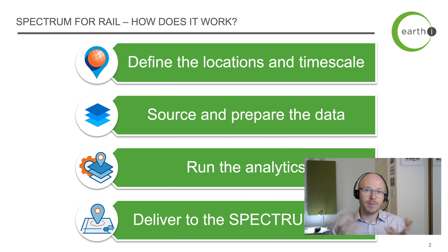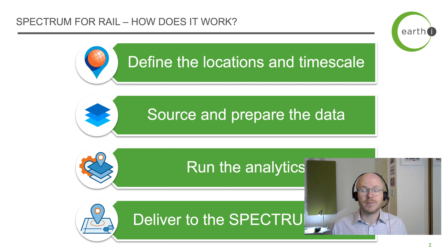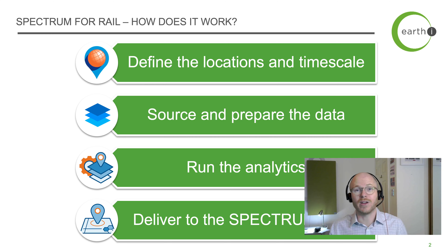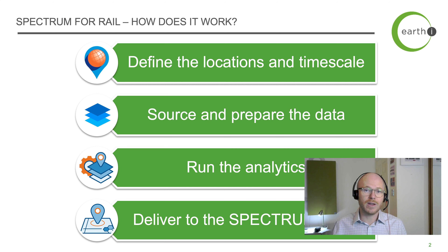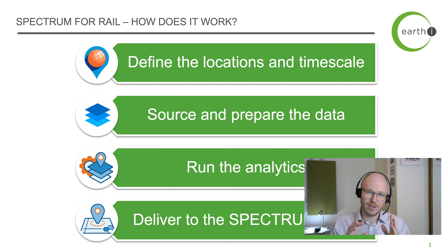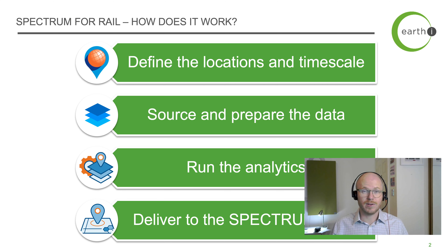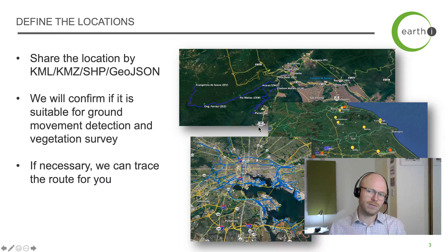For the service, we have to define the locations and the timescale — that's quite important. What's the timescale that's going to be useful? In some areas of the world there aren't so many deciduous trees, but at temperate latitudes that's an important consideration. We source and prepare the data from a variety of different sources — all the big names in satellite imagery, plus some lower-cost sources. We quality control it, run analytics combining mathematical analysis and AI, and then deliver it into the Spectrum portal.